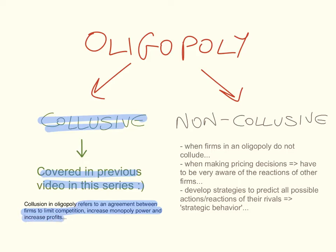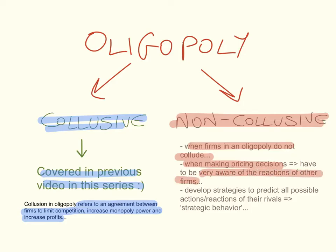This video will focus specifically on non-collusive oligopoly. Non-collusive oligopoly happens when firms in an oligopoly do not collude — they do not come together and cooperate, either openly and formally, or even tacitly or informally. When making pricing decisions, firms have to be very aware of the reactions of other firms, and therefore must develop strategies to predict all possible actions and reactions of their rivals. That's why strategic behavior becomes very important in non-collusive oligopoly.